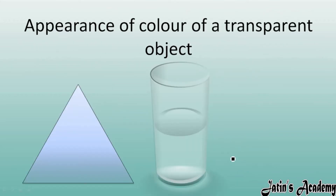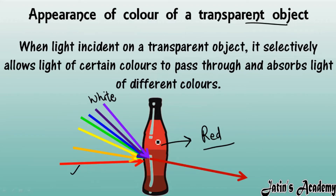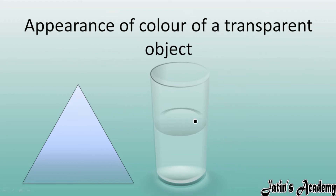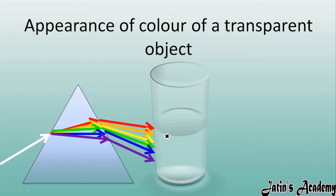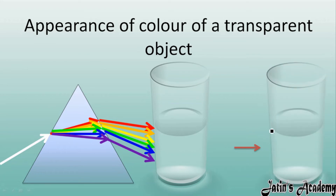Next, the appearance of color of a transparent object: when we have a fully transparent white object, and white light falls on it, this transparent object will allow all the light to pass through it. After allowing all light to pass through, we are able to see the glass as colorless or white.